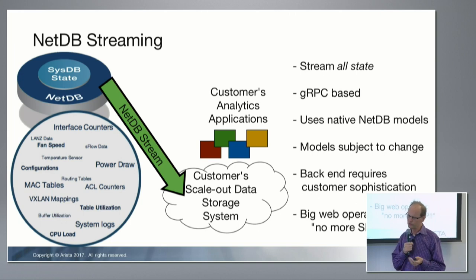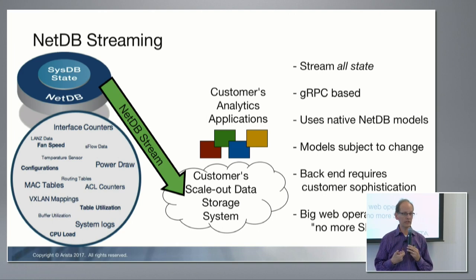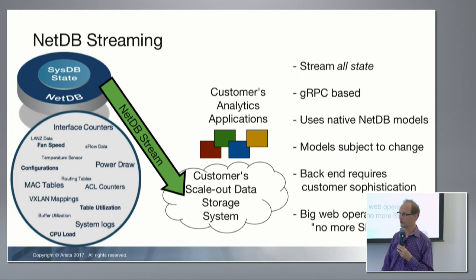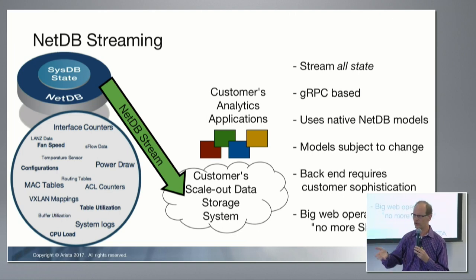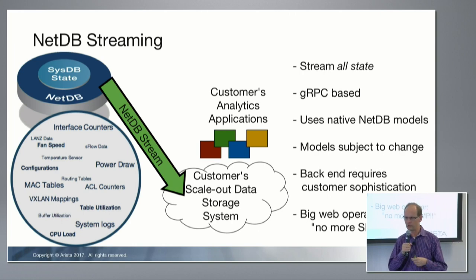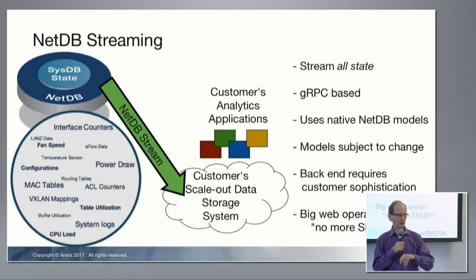We have a small number of customers who have implemented a backend for this — an ingest gateway that consumes the NetDB stream from each of our switches and loads it into their own proprietary big data backend. They have a full history of all the state across all their devices — they can ask what changed in IP routing tables two weeks ago on a Thursday. They can do trending counters, capacity planning, anomaly detection, and event correlation.